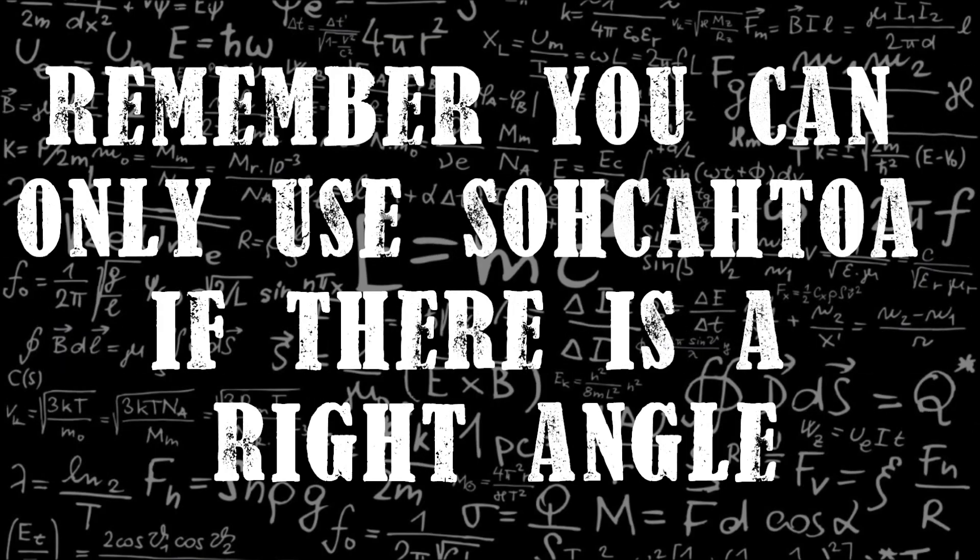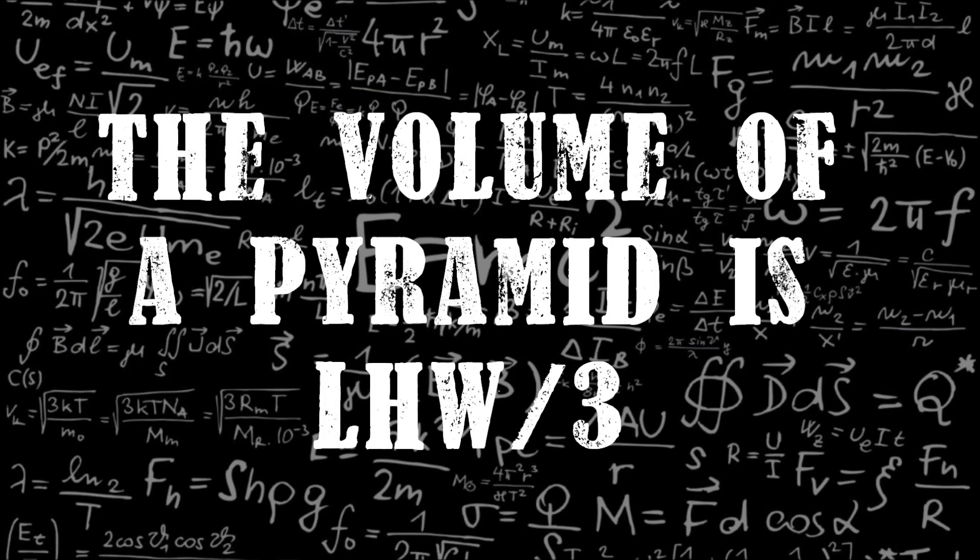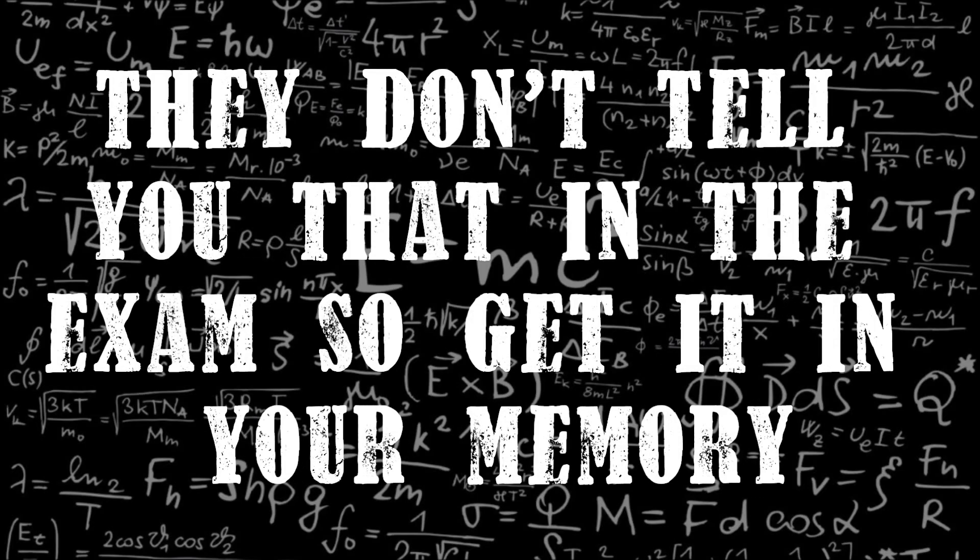Remember you can only use SOHCAHTOA if there is a right angle. Volume of a pyramid is LHW over 3. Don't tell you that in the exam, just get it in your memory.